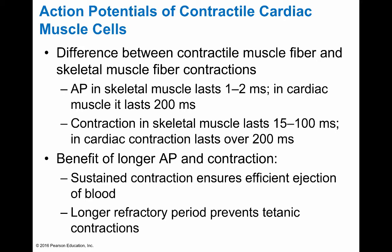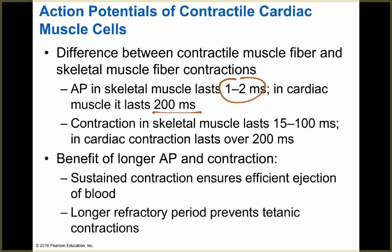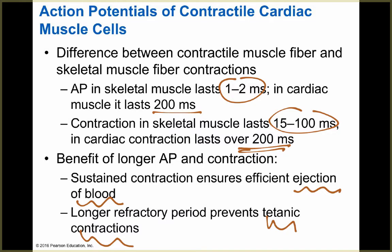The difference between contractile cardiac muscle fibers and skeletal muscle fibers: the action potential in skeletal muscles lasts about 1–2 milliseconds, whereas in cardiac muscle it lasts about 200 milliseconds. Contractile and skeletal muscle contractions last between 10 and 100 milliseconds, while cardiac lasts over 200 milliseconds. The benefit of longer action potentials and contractions is that it makes sure all the blood gets out of the ventricles, and the longer refractory period means you won't have tetanic contractions — instead, strong, efficient contractions push all the blood out, then the heart relaxes and waits for the next beat.